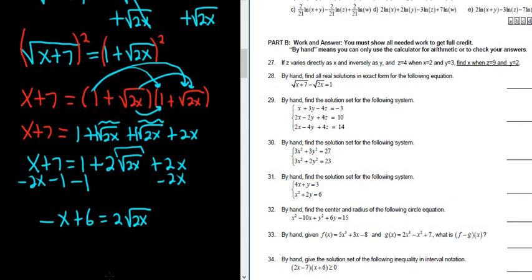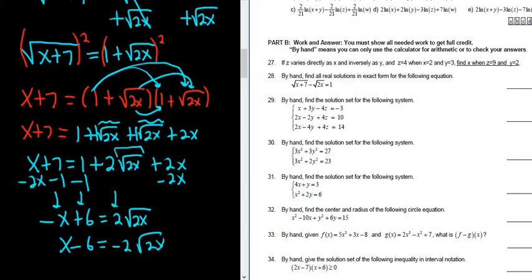We could divide by 2, but that creates a fraction, so let's square both sides. But first, it's easier to multiply everything by negative 1 — that just switches all the signs. So we get x minus 6 equals negative 2 square root of 2x. We multiplied both sides by negative 1, making it a bit easier to expand.